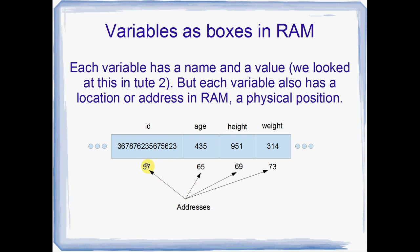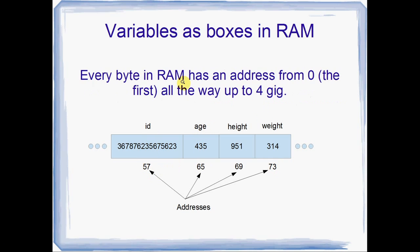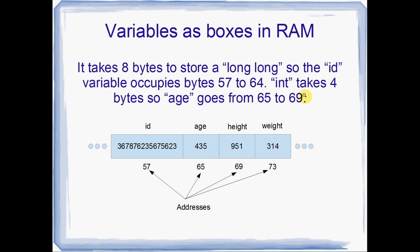Along with having the name and the value, each box actually has an address in RAM. Here we've got addresses 57, 65, 69 and 73. These are the physical positions in RAM, so the id variable is physically before the age variable when stored in RAM. Every byte in RAM has an address, from 0 all the way up to 4GB, 8GB, or 12GB — however many gigs of RAM you've got, every single byte has an address, numbered 0 all the way through.